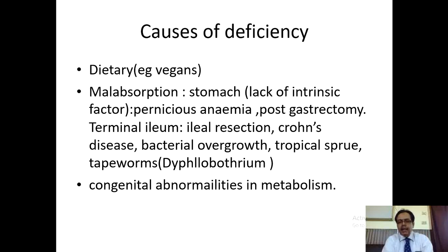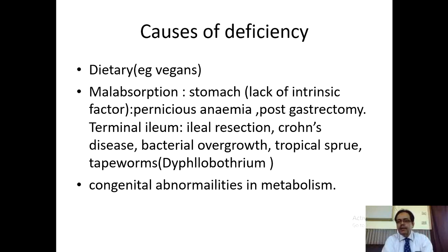Further down, in the terminal ileum: any ileal disease, ileal resection, Crohn's disease, bacterial overgrowth, tropical sprue, and the tapeworm Diphyllobothrium latum can lead to vitamin B12 deficiency. Congenital abnormalities in metabolism can also lead to vitamin B12 deficiency.